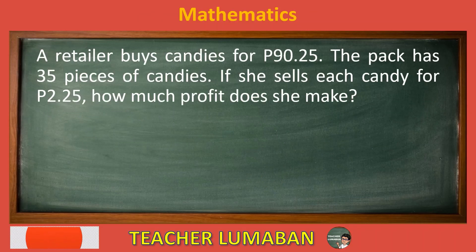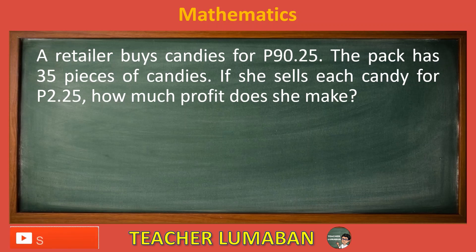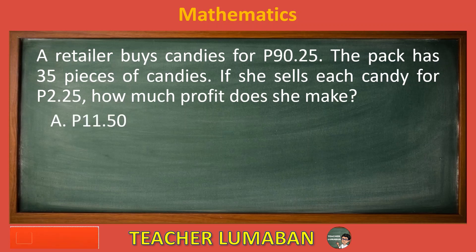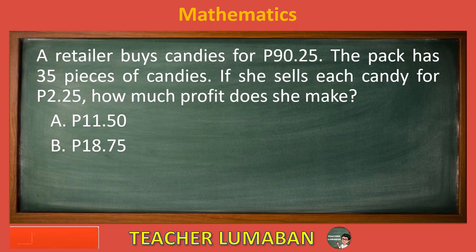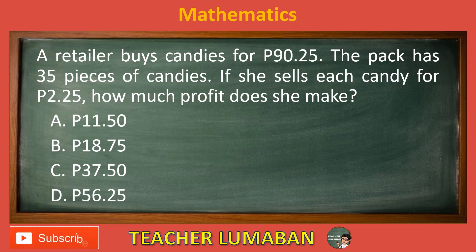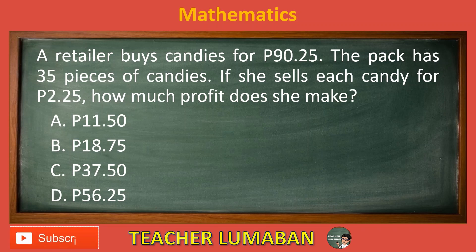A retailer buys candies for 90.25 pesos. The pack has 35 pieces of candies. If she sells each candy for 2.25 pesos, how much profit does she make? Letter A: 11.50 pesos. Letter B: 18.75 pesos. Letter C: 37.50 pesos. Letter D: 56.25 pesos. Choose the suitable answer based on the given choices in 5 seconds.